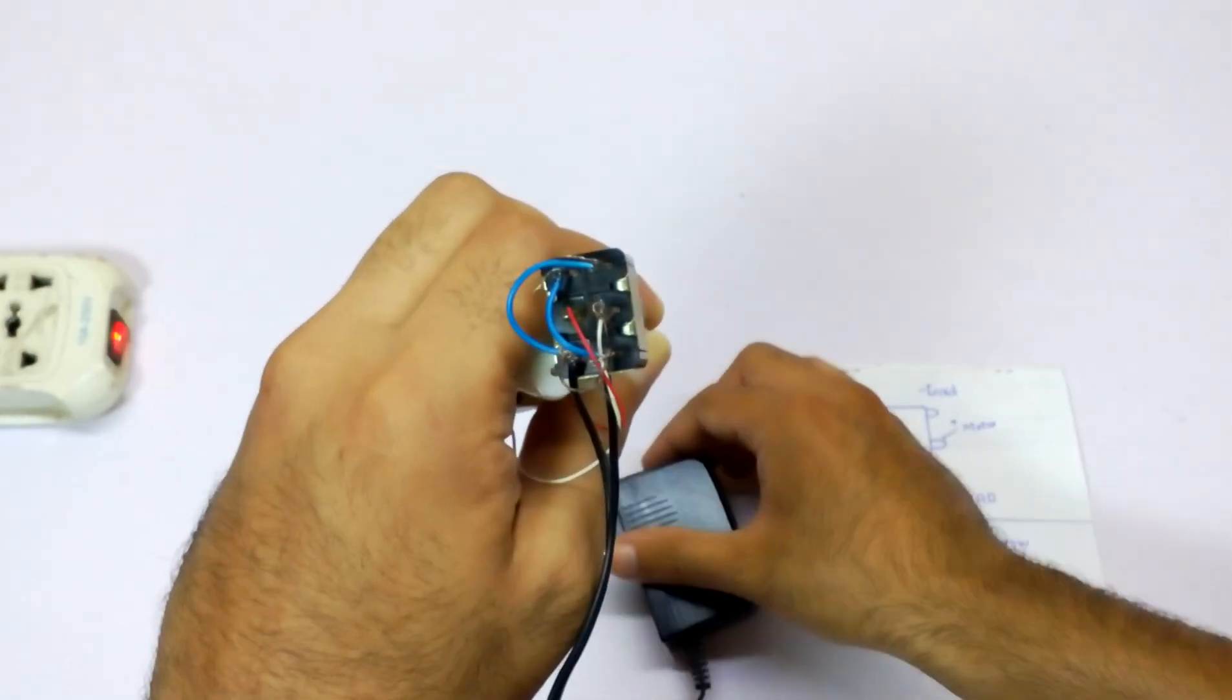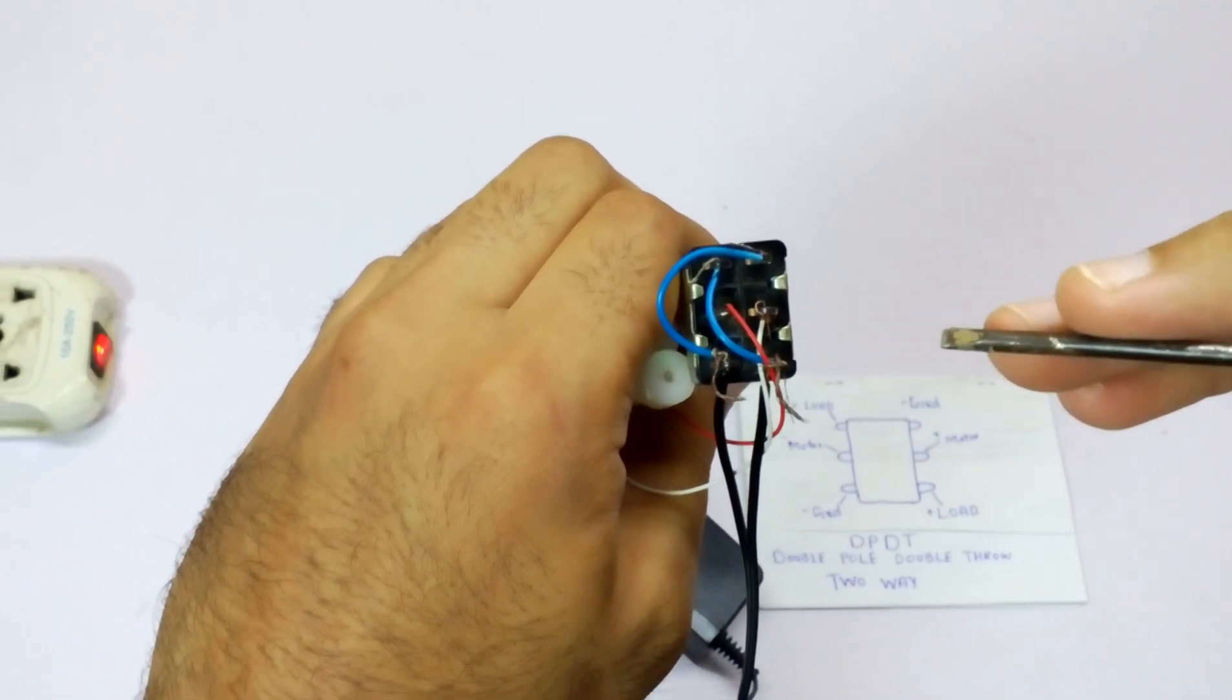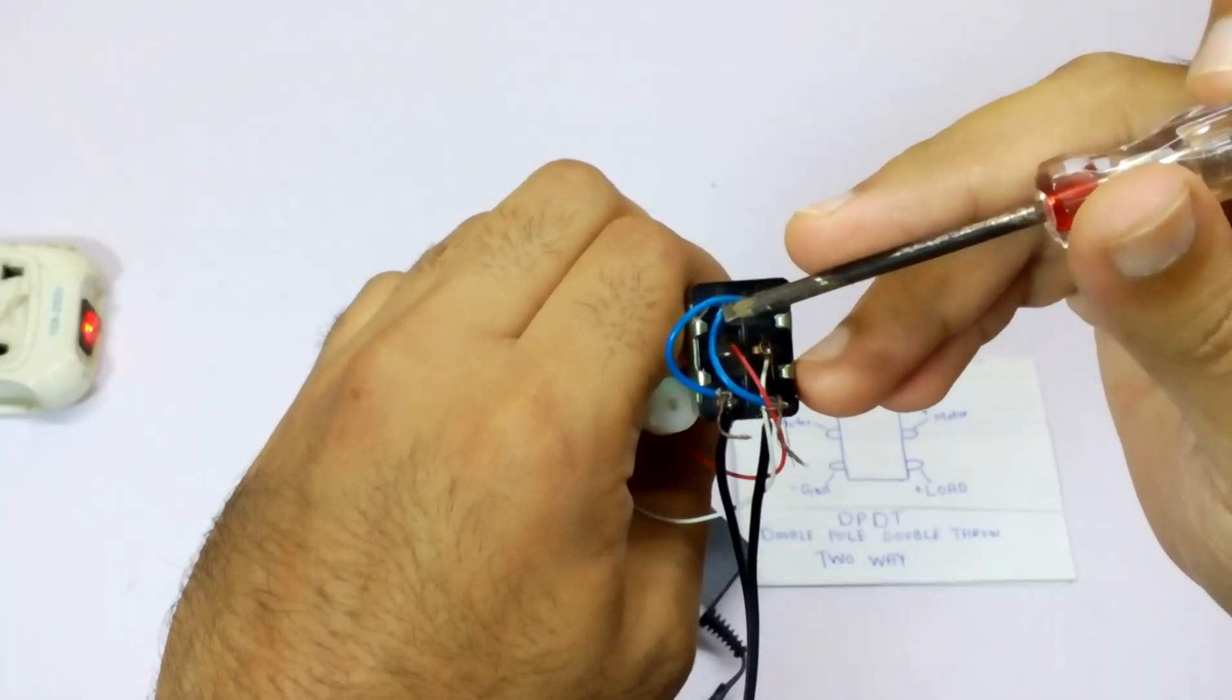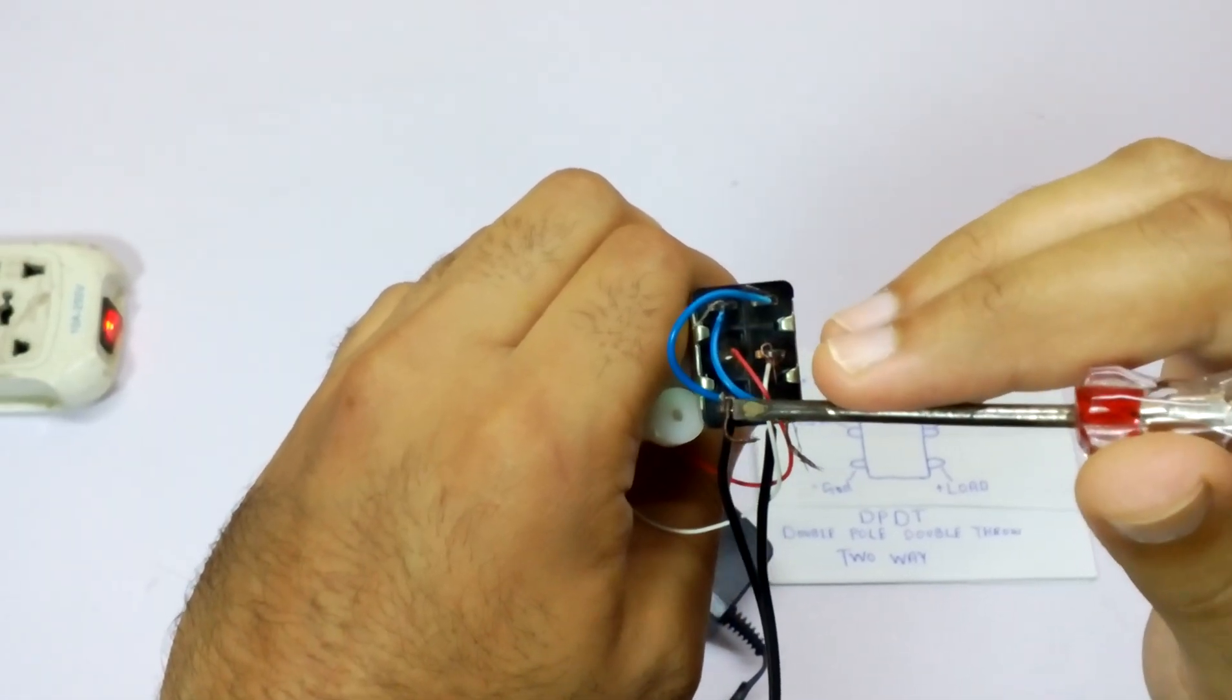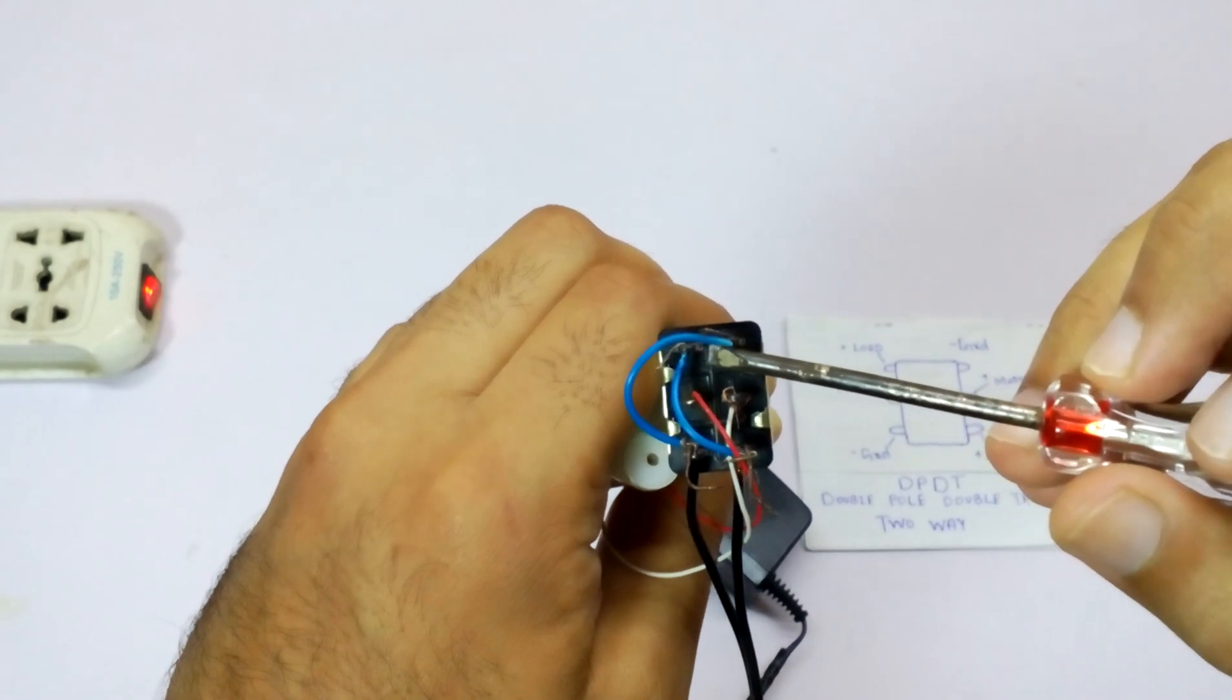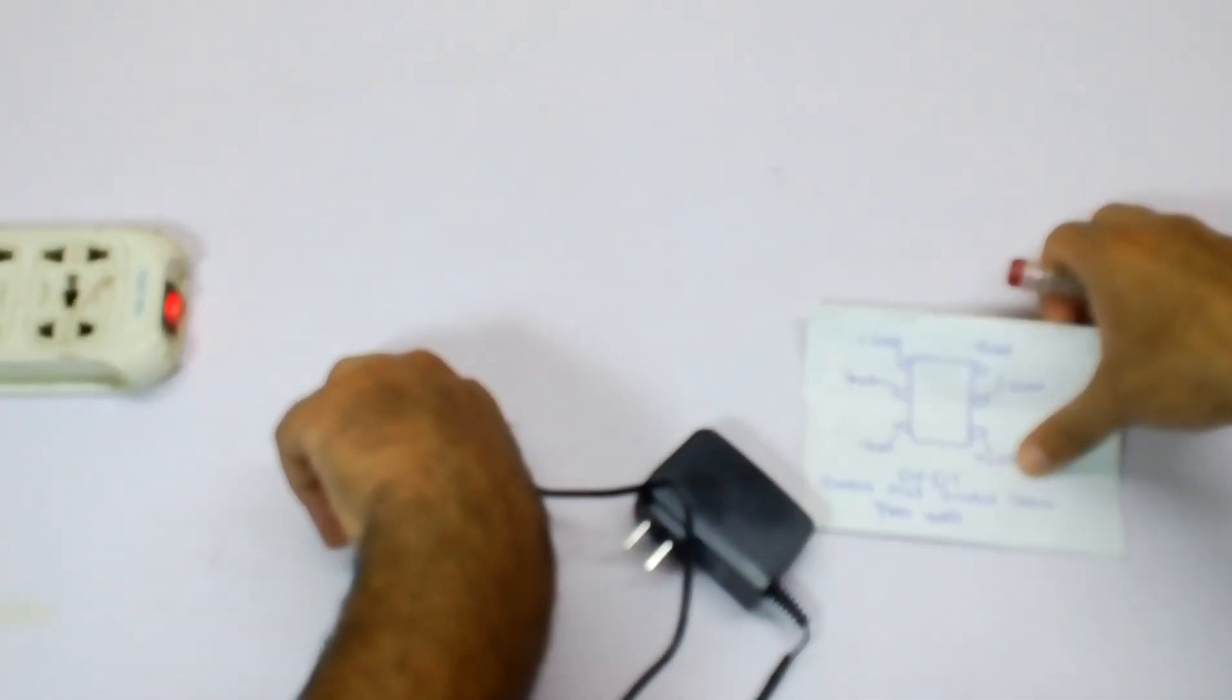This side, as you can see, this is load 12 volt and this is negative. I have connected this wire over here onto the opposite direction of the circuit, onto the pole over here. And this one, the load one, is going to be connected onto the opposite side over here. These are the motor connections.